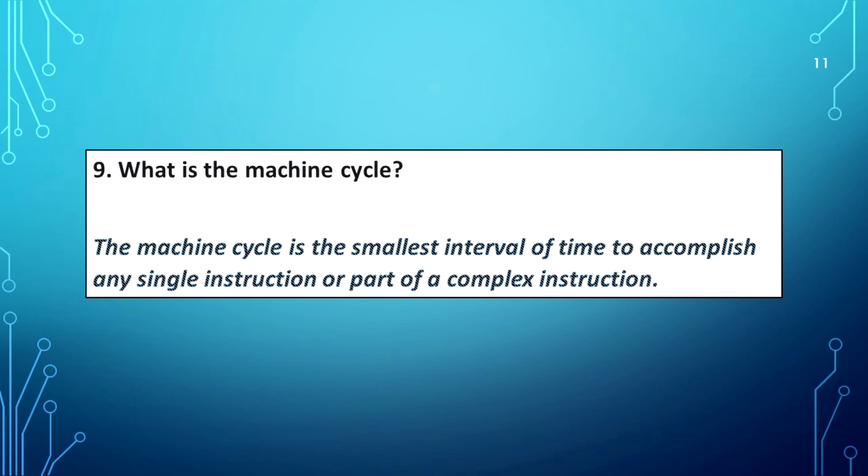What is the machine cycle? The machine cycle is the smallest interval of time to accomplish any single instruction or part of a complex instruction.